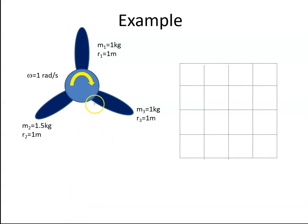Okay, so we'll look at an example now of the balancing of rotating masses. This is what we call a static balance. So we have this propeller where we have one kilogram at one meter here, and we have one kilogram by one meter here, and 1.5 kilograms by one meter here.